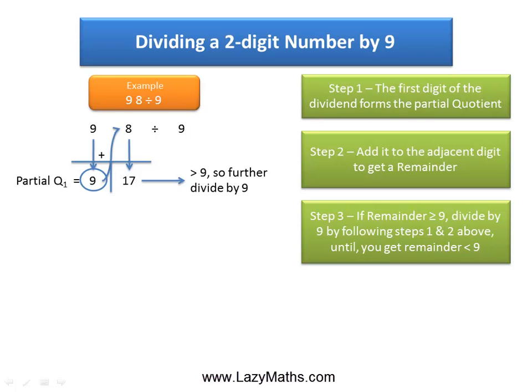Now because 17 is bigger than 9, we further continue with this process of dividing 17 with 9 using the same shortcut, and we get 1 as our partial quotient Q2, and then we add 1 plus 7, and we get 8.